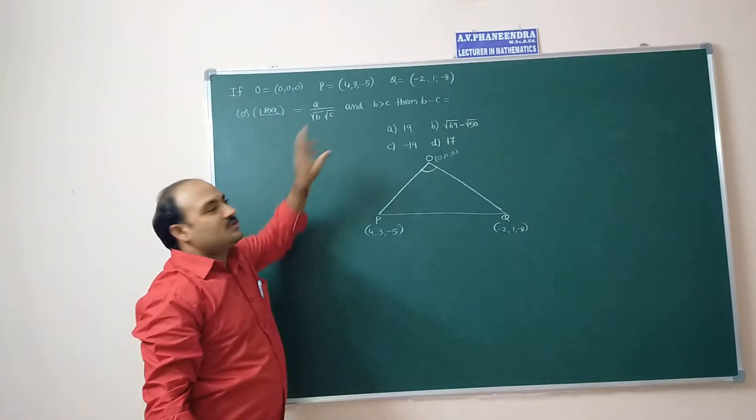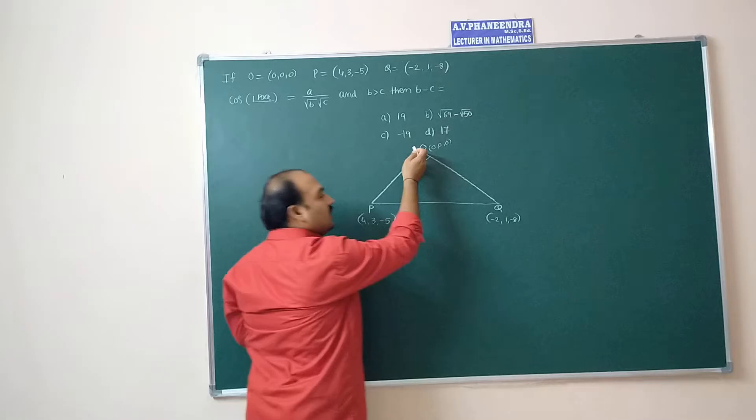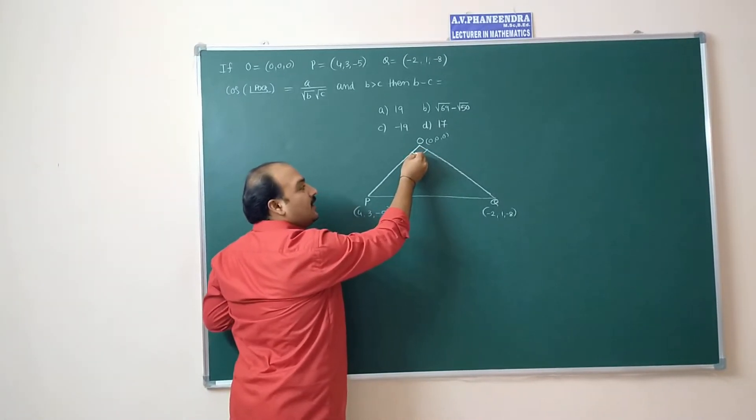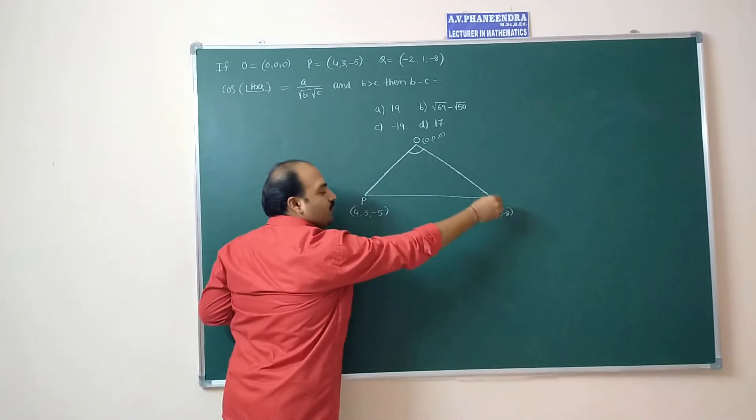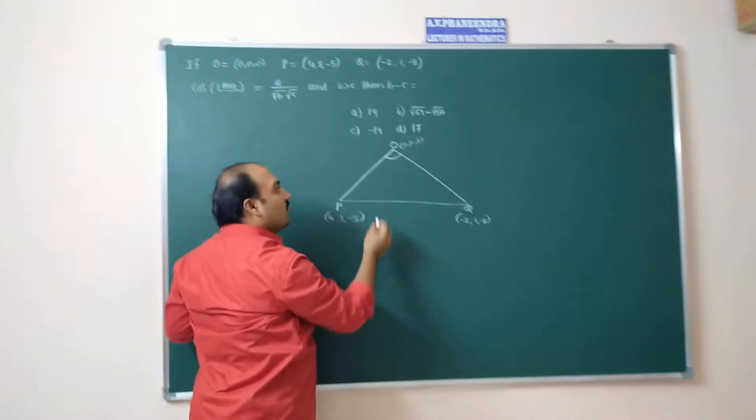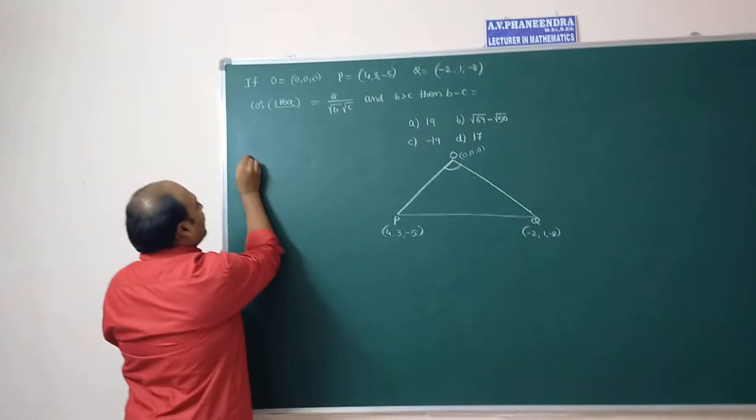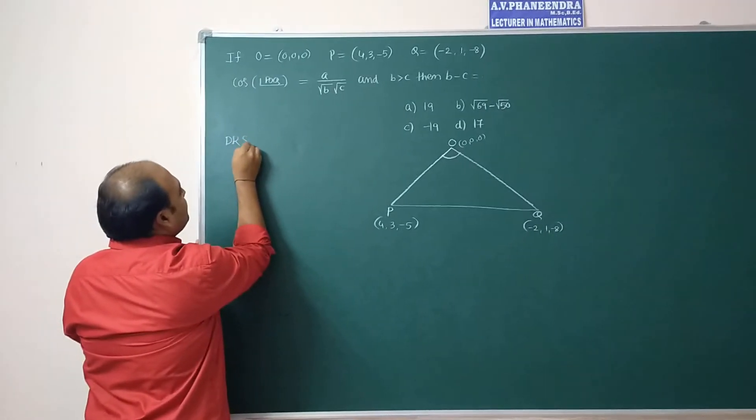Origin is 0, 0, 0. This angle is given as a by root b root c. First, angle between this side and angle between this side. We need to calculate directional ratios of OP side.